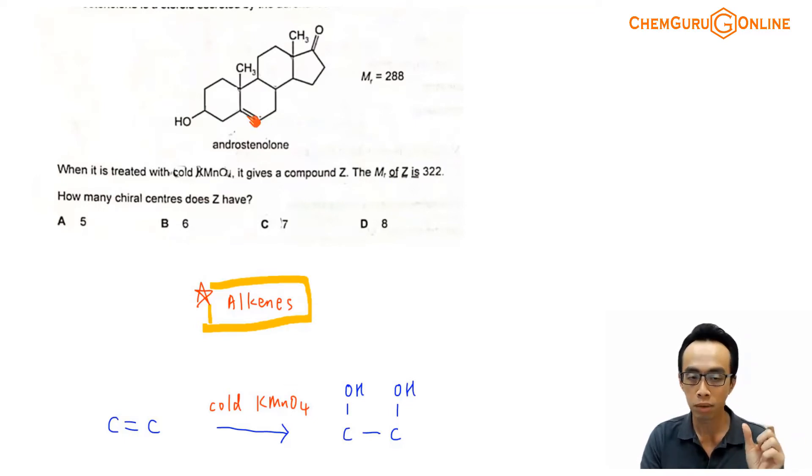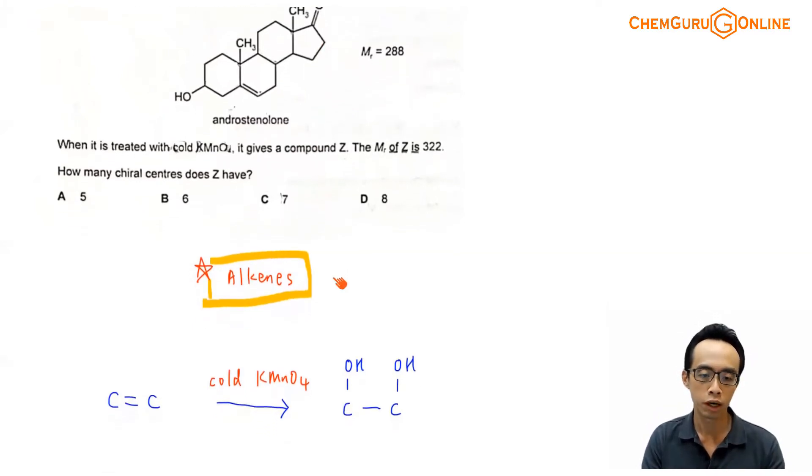And you notice the rest of the functional groups, they are either alkane carbon, which cannot be oxidized by manganate. And this ketone functional group is also stable to oxidation. So we cannot use manganate to oxidize ketone. Therefore we know that we are targeting the oxidation of alkene.